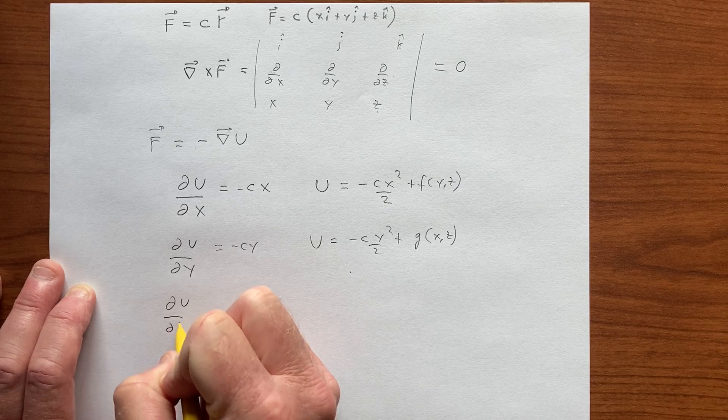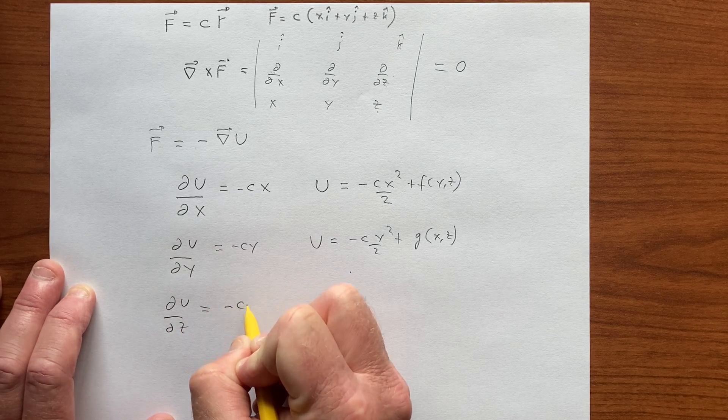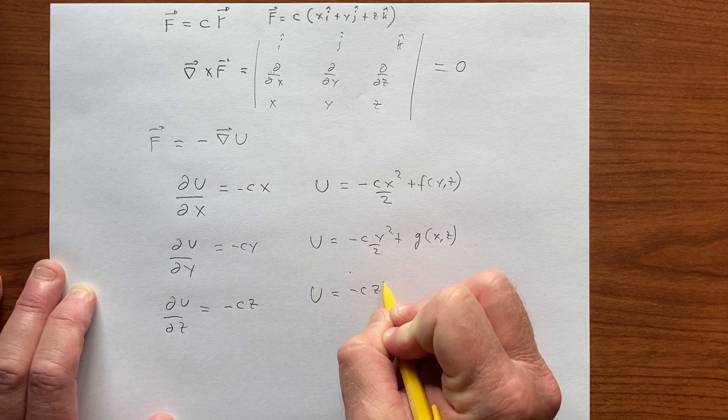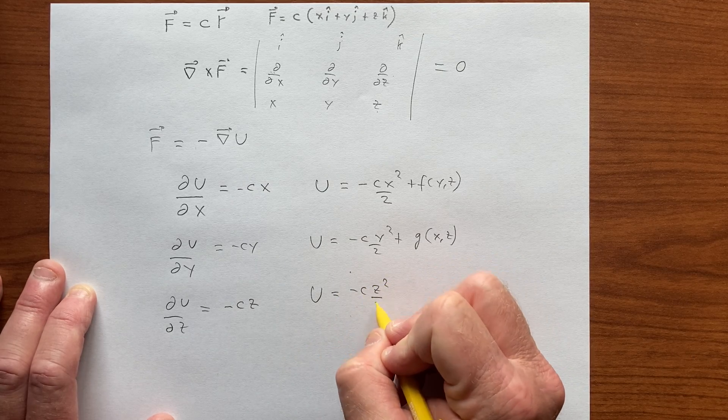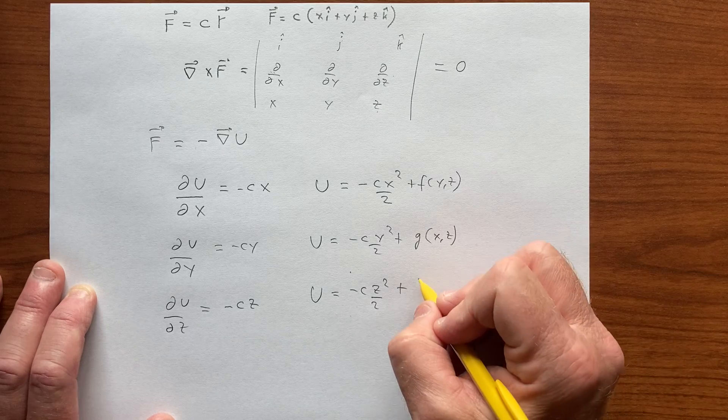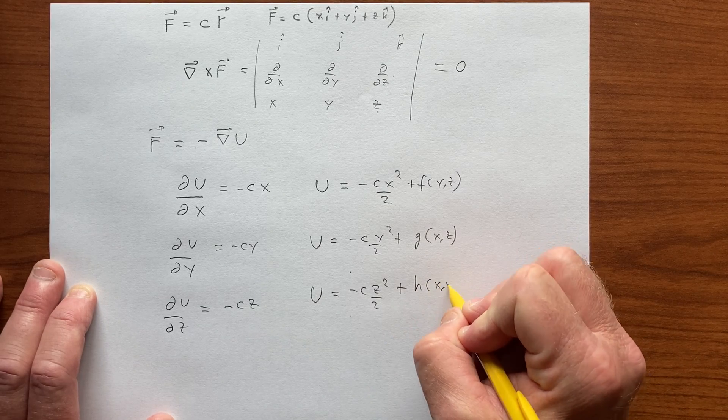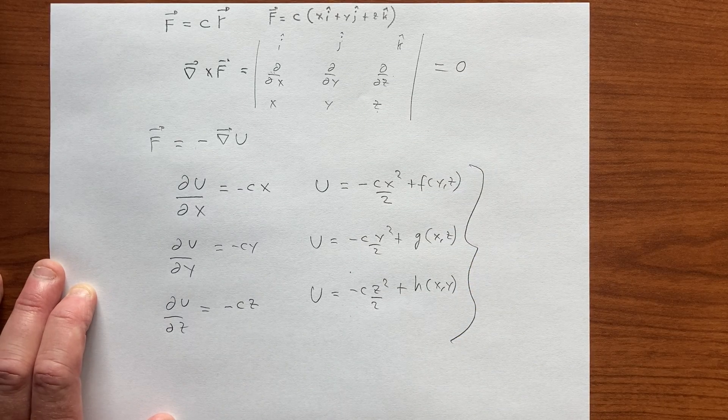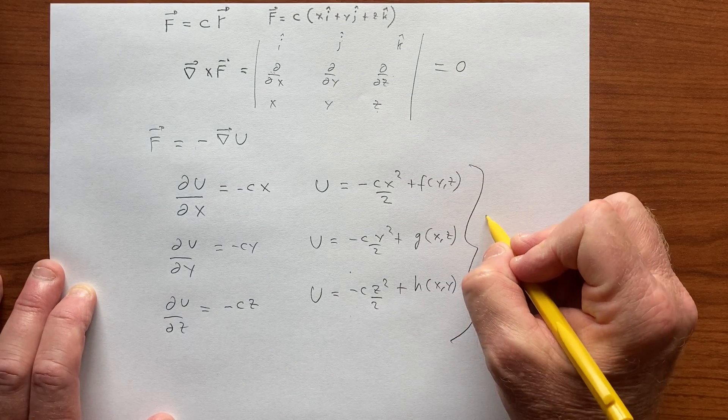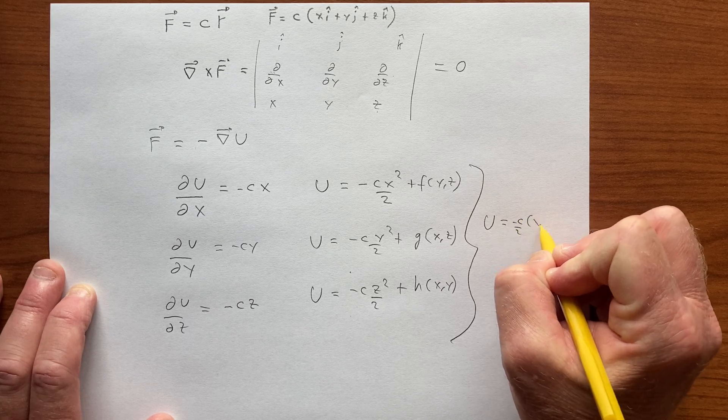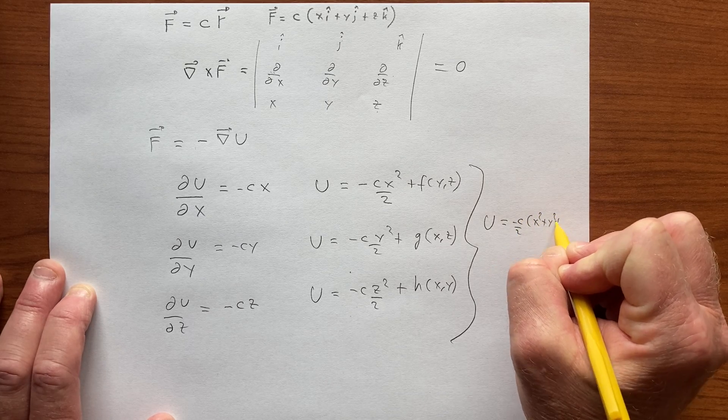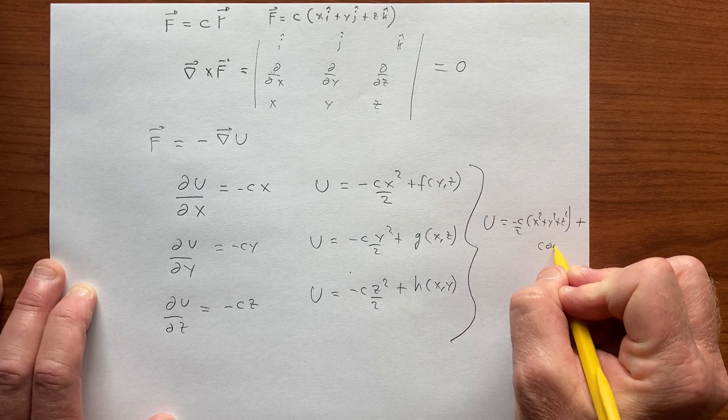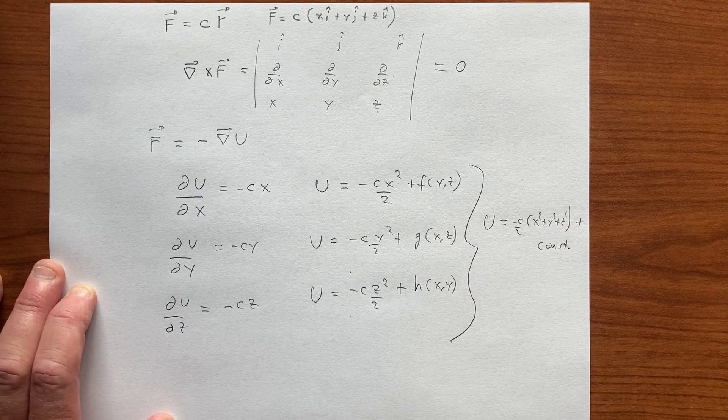And if we look at this, we get minus C times Z. So U is minus C times Z squared over 2, plus some function of X and Y. So all of these are compatible. If U is minus C over 2, X squared plus Y squared plus Z squared, plus at most some number, some constant.